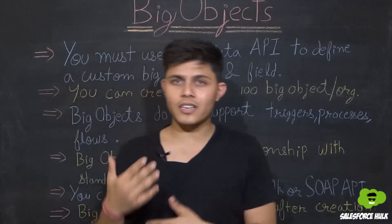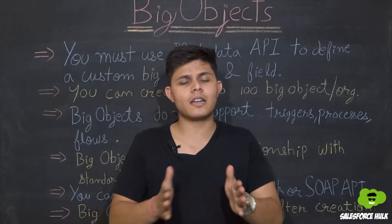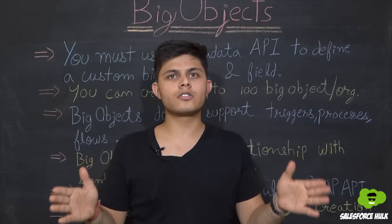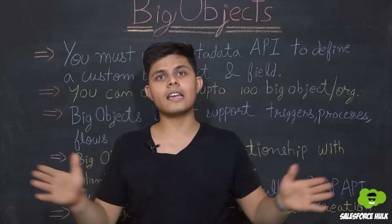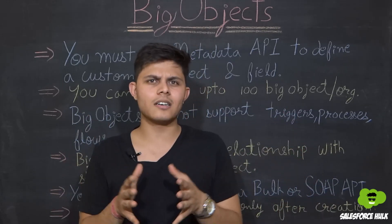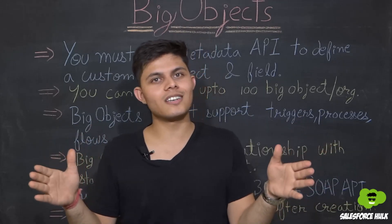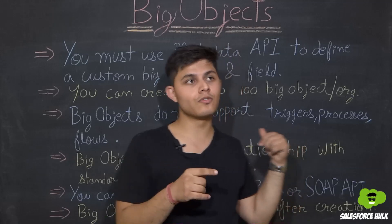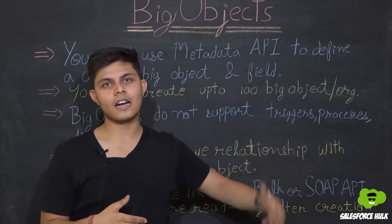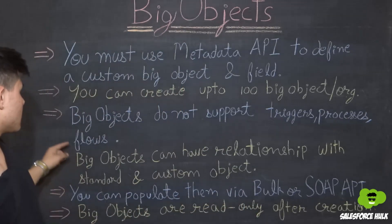Big objects do not support triggers, processes, or flows. Because we can store millions of records, removing these features is necessary to scale the database and avoid excessive overhead.